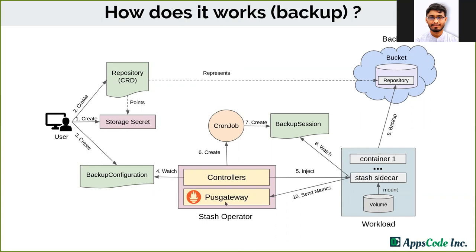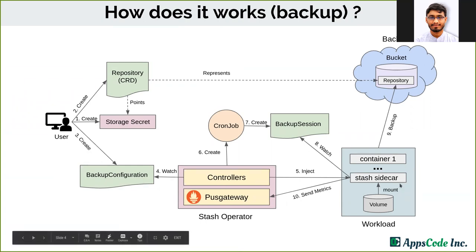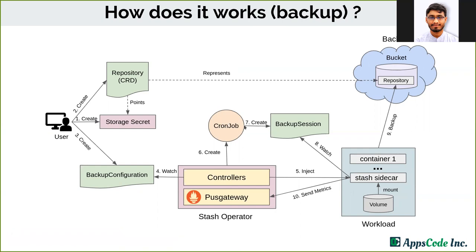When the Stash operator sees a backup configuration, it will inject a Stash sidecar inside the targeted workload, then it will create a cron job. This cron job will trigger backup periodically. When a backup schedule appears, the cron job creates a backup session CR. This backup session CR is watched by the Stash sidecar inside the targeted workload. When the Stash sidecar sees a backup session, it immediately takes backup to the backend.